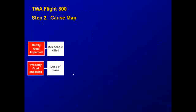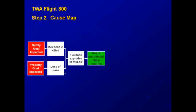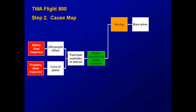Our safety goal is impacted because of the 230 people that were killed. The property goal is impacted due to the loss of the plane. Both resulted from a fuel tank exploding in midair. That fuel tank exploded because of a rapid uninhibited chain reaction, and in order for that to occur, we need a heat source — in this case, found to be arcing from bare wires.